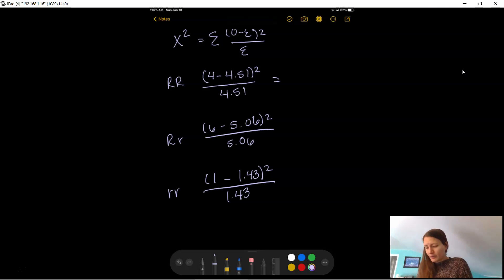So I'm going to go ahead and do this first one. So 4 minus 4.51, beautiful. Then I will square it. So I'm actually doing each of these steps individually in my calculator. So again, that was 4 minus 4.51, then I square, and then I divide by 4.51.